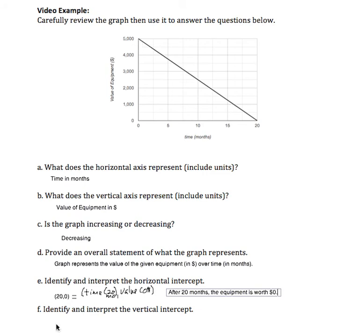And the coordinates are 0 comma 5,000. And that equals 0 months and 5,000 dollars if we look at the units.